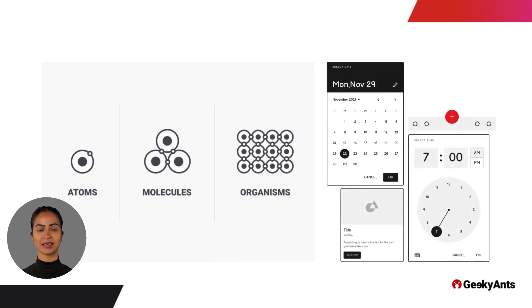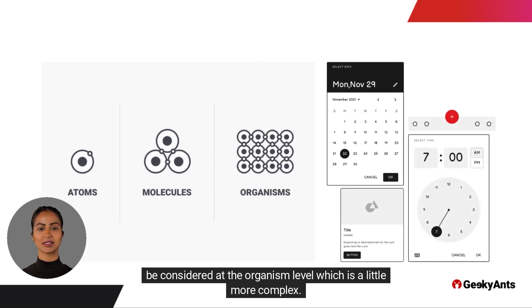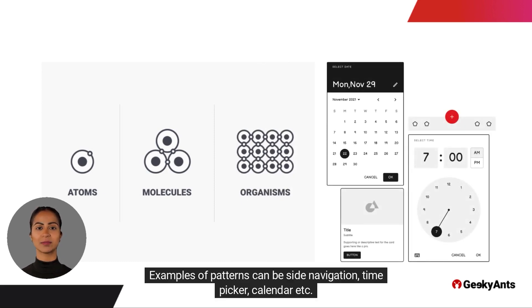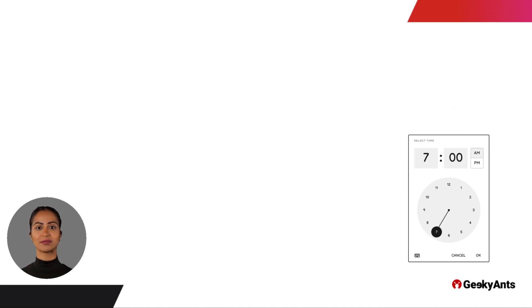Whereas pattern libraries can be considered at the organism level, which is a little more complex. Examples of patterns can be side navigation, time picker, calendar, etc.